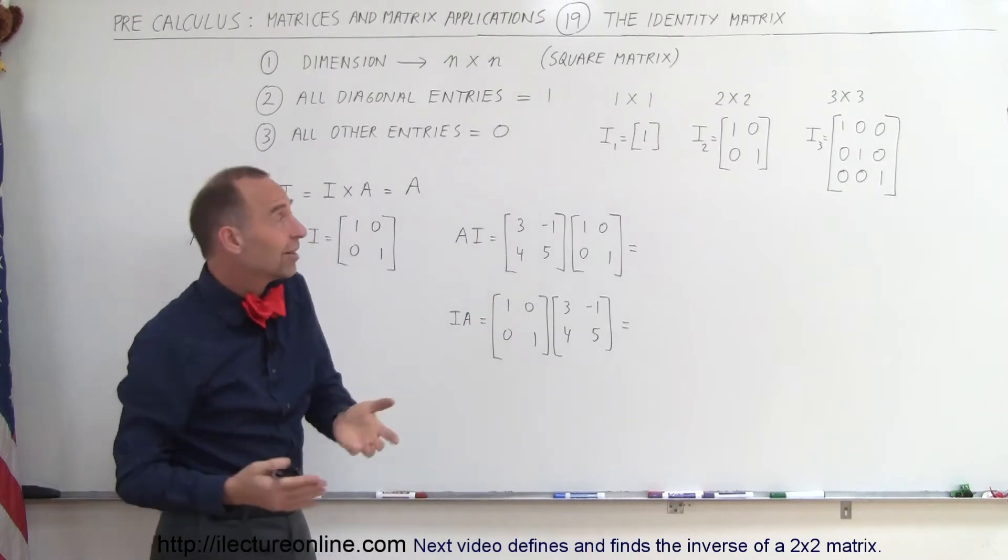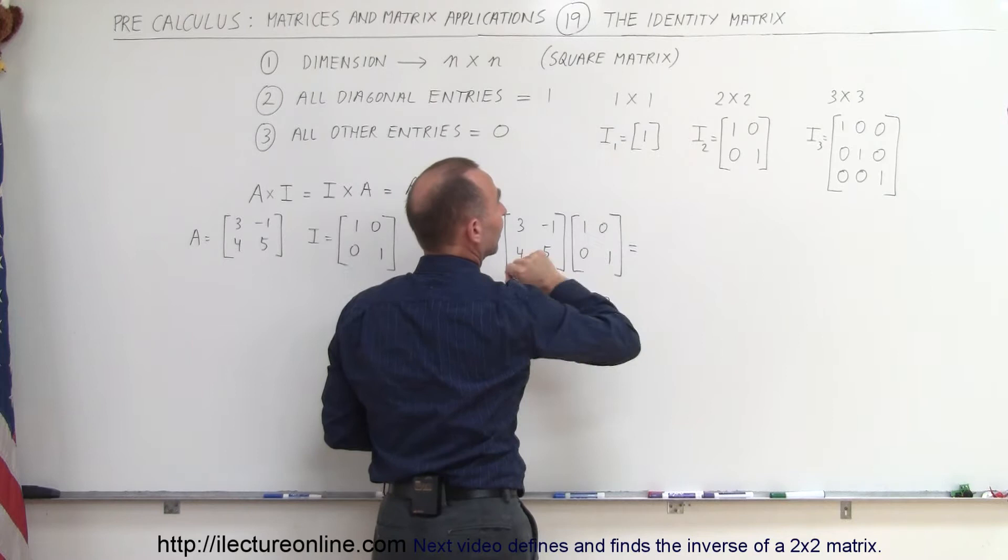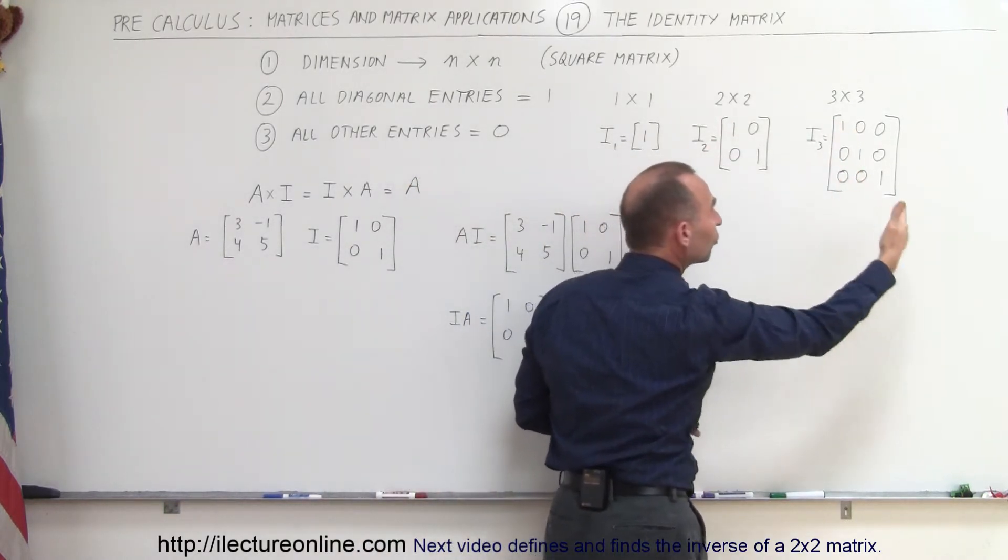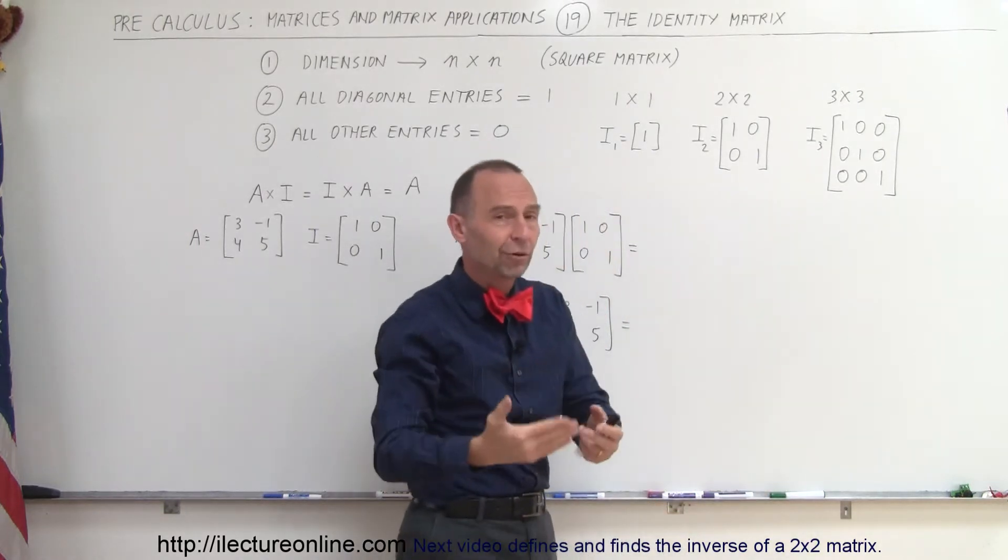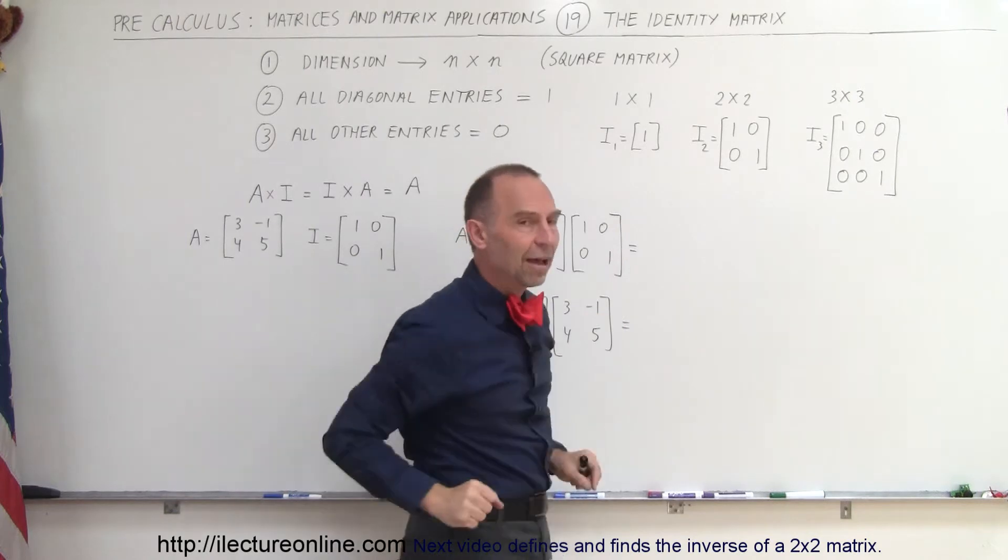So therefore, by necessity, if we have a 1 by 1 matrix, an identity matrix, it looks like this. A 2 by 2 matrix looks like this. A 3 by 3 matrix looks like this, and so forth. Obviously, a 4 by 4, 5 by 5, you'll see 1s across the diagonal and 0s everywhere else.